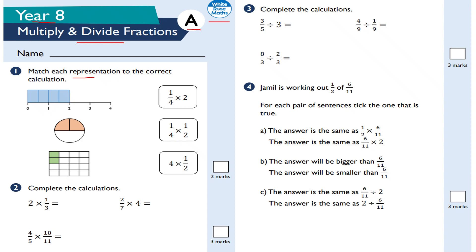Match each representation to the correct calculation. Here I've got 2 wholes. 2 wholes is the same as 4 times a half, because 4 times a half becomes 4 halves, and 4 halves simplifies to the number 2. This next one, I've got a half. A half is the same as saying 2 quarters — a quarter times 2 is equal to 2 quarters. I do 1 times 2, which is 2, and I keep my denominator fixed, so the answer is 2 quarters, which is the same as 1 half.